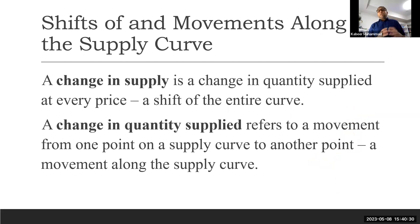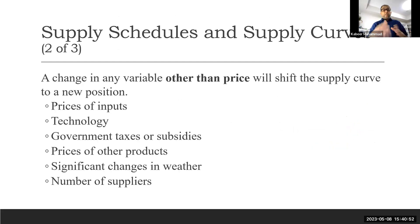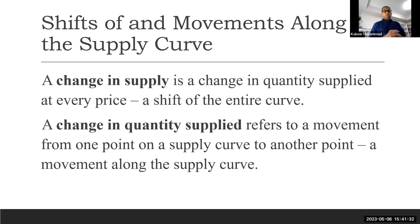Now, the last point — similar to what we discussed on the demand side — is the distinction between change in supply and change in quantity supplied. Change in supply is caused by all these determinants: prices of inputs, technology, government taxes or subsidies, prices of other products, significant change in weather, and number of sellers. These factors or determinants cause a change in supply. The only variable that causes a change in quantity supplied is the price of the product itself. Change in supply reflects a shift of the curve, while change in quantity supplied is caused by a change in price and is a movement along the curve.